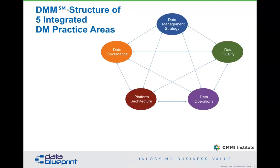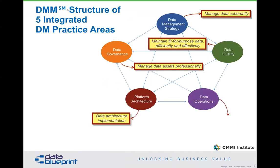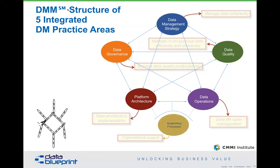These are the five data quality practice areas: managing data cohesively, data governance, data quality — maintaining data that is fit for purpose — data platform and architecture, and supporting processes. Right now, your data is probably managed well at the work group level. We have data governance professionals, quality functions, platform and architecture practices. Most people are unaware of the supporting processes piece, but it is foundational to this discipline.